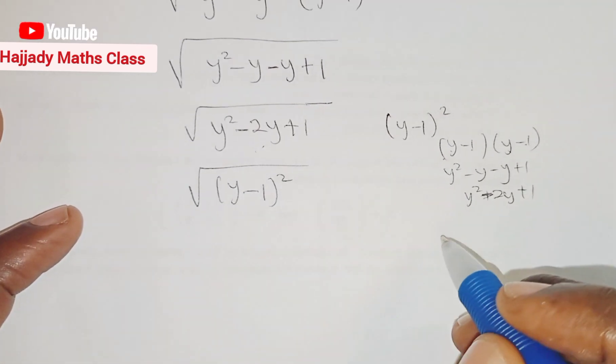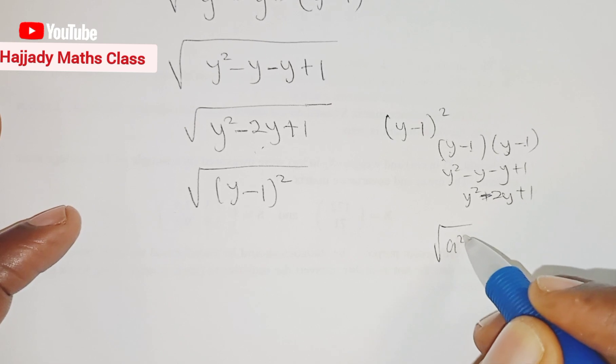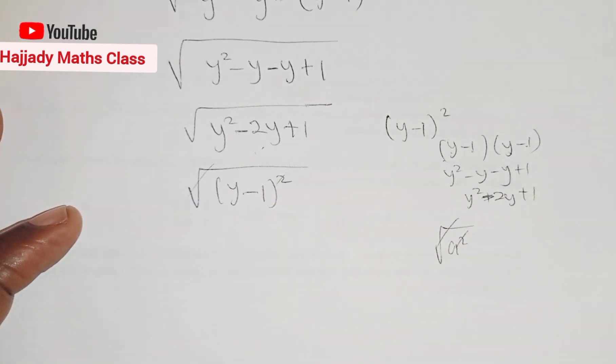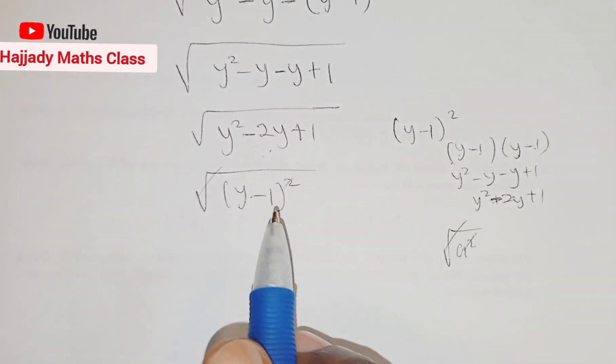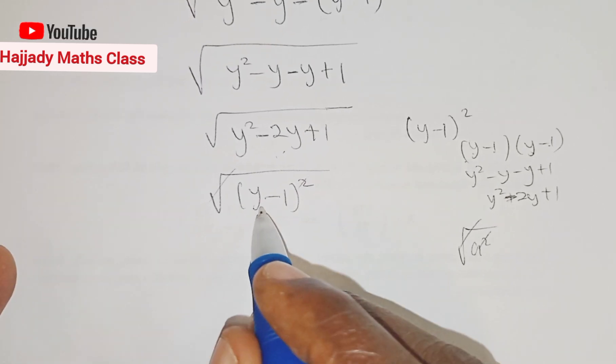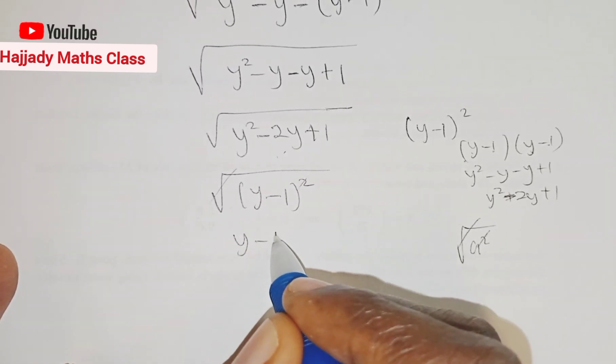And don't forget the rule of indices that root a squared can cancel out. So this is going to cancel out the roots. This is the application of rule of indices. So with this, we have y minus 1.